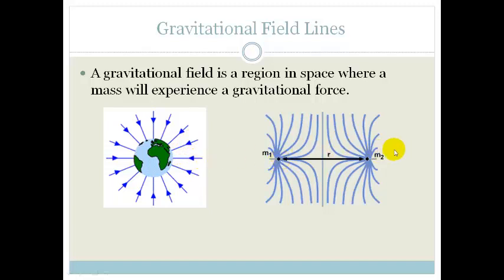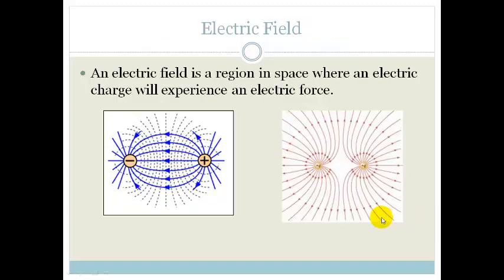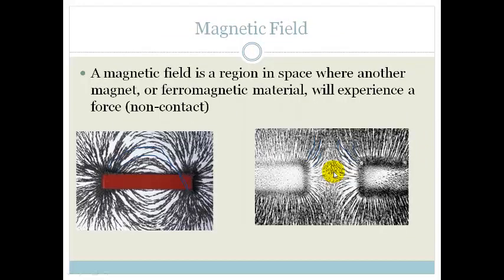And if we have two masses, you can see that the field lines are very similar to if we've got, on the right-hand side here, if we've got two charges of the same type, both in this case are positive, or over here, where we've got repulsion occurring.